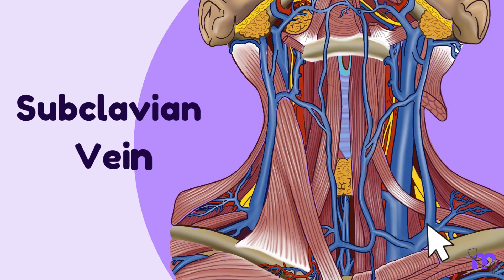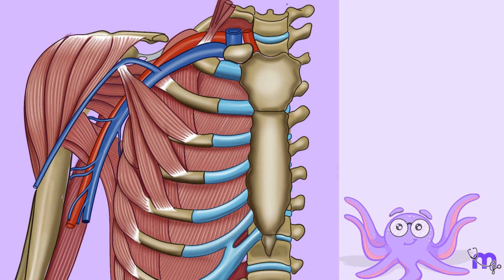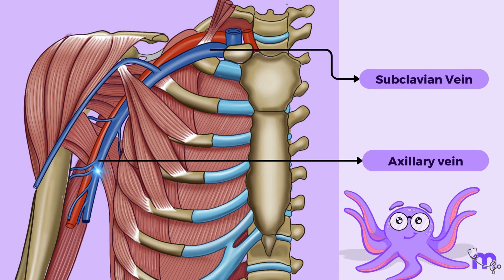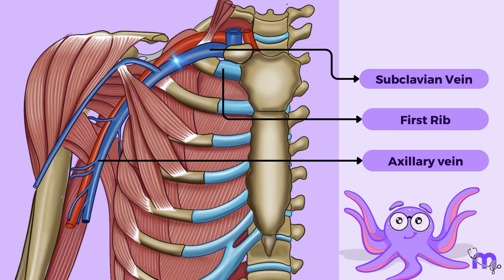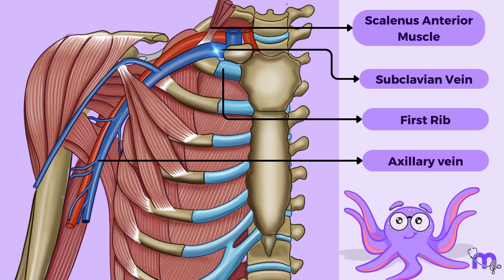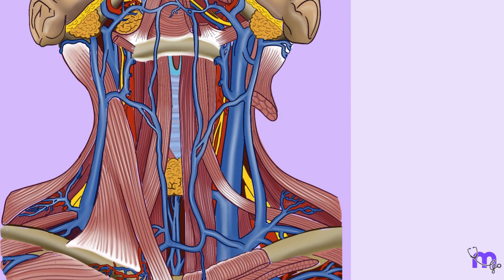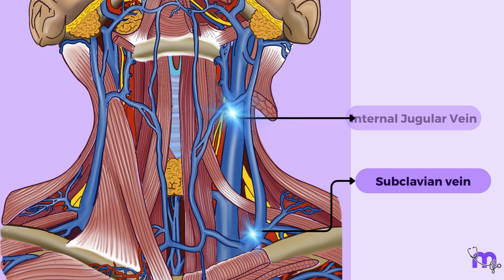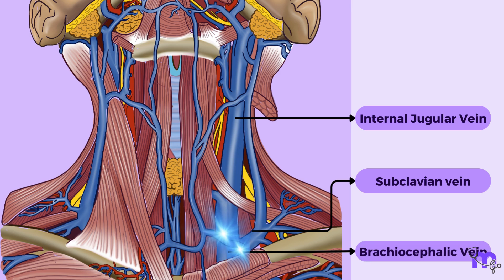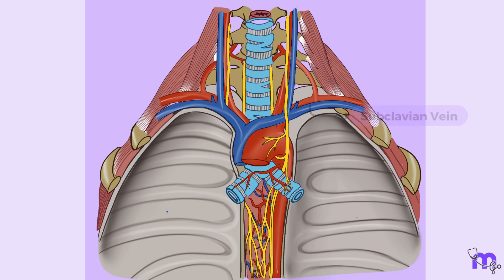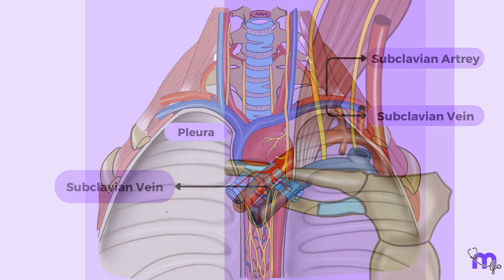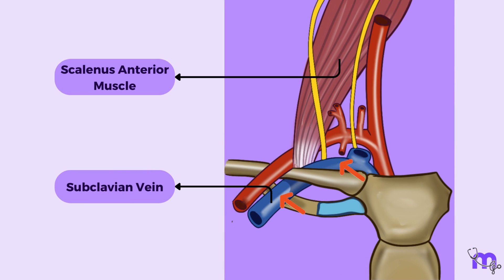Let us now examine the subclavian vein. It represents a continuation of the axillary vein and stretches from the outer border of the first rib to the medial border of the scalenus anterior muscle, where it joins the internal jugular vein to form the brachiocephalic vein. The primary function of the subclavian vein is to drain the upper limb. A noteworthy detail is its arch-shaped course across the pleura, situated below the arch of the subclavian artery, with the scalenus anterior muscle separating these two arches.